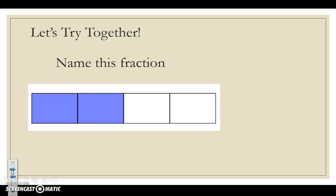Let's try one together. We want to name this fraction. The first thing we have to do is see how many equal parts our one whole is broken into. We have 1, 2, 3, 4. That becomes our denominator or the number on the bottom.